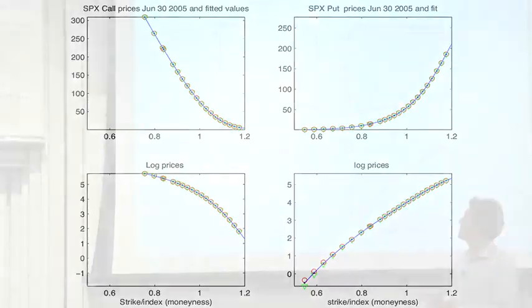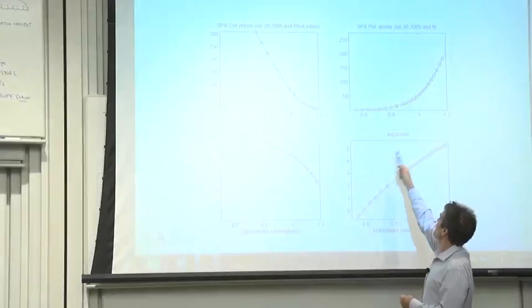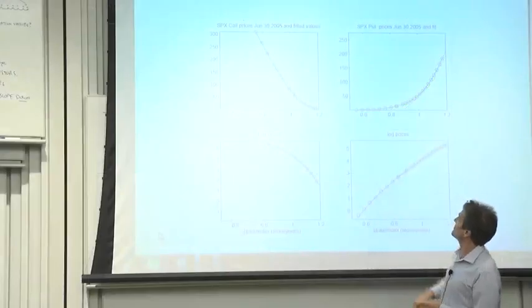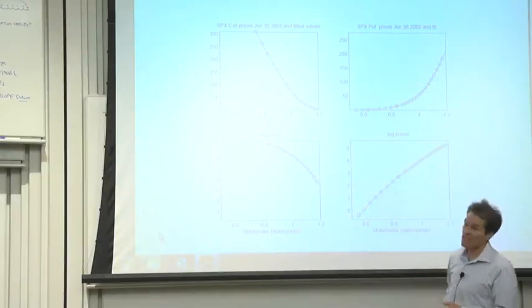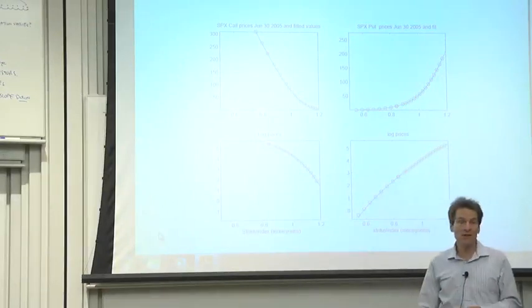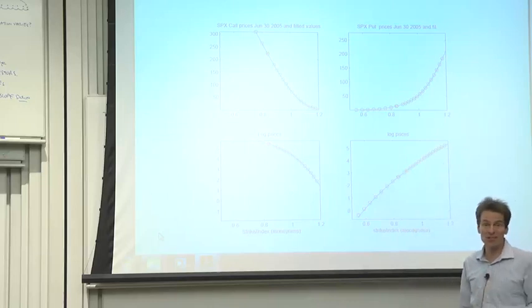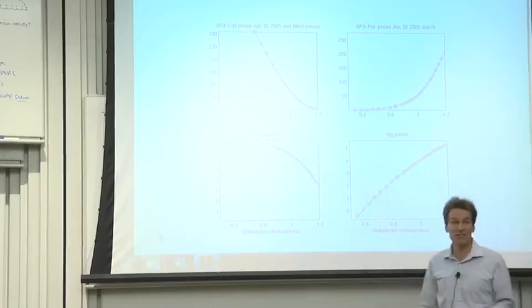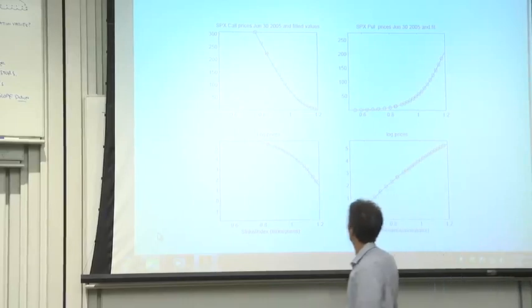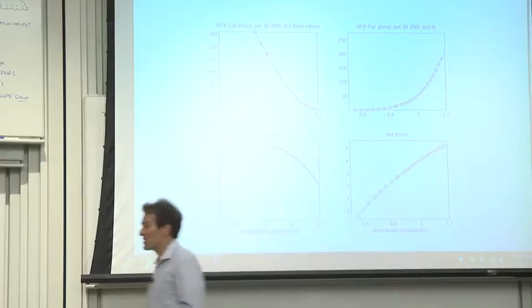How about those out of the money put options? They look remarkably cheap, don't they? To protect yourself against a 20% loss, that's the 0.8, it looks like it's only a few bucks worth of insurance premium. So, you can cut off that whole left tail for something that looks like about two bucks on the graph.